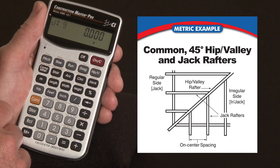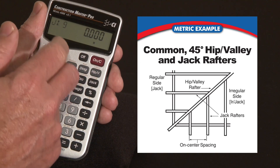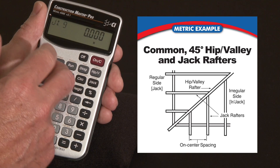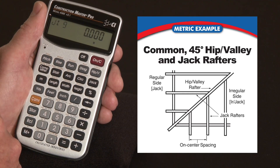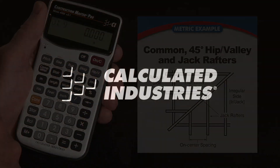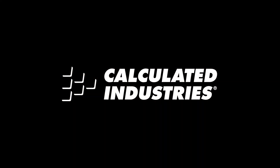Down to the last one. The Construction Master Pro can also handle dual pitch roofs and calculate the regular hip and valley and jack rafter lengths. That's a quick overview on the rafter functions. For more details you can download our user guide at www.calculated.com/support.